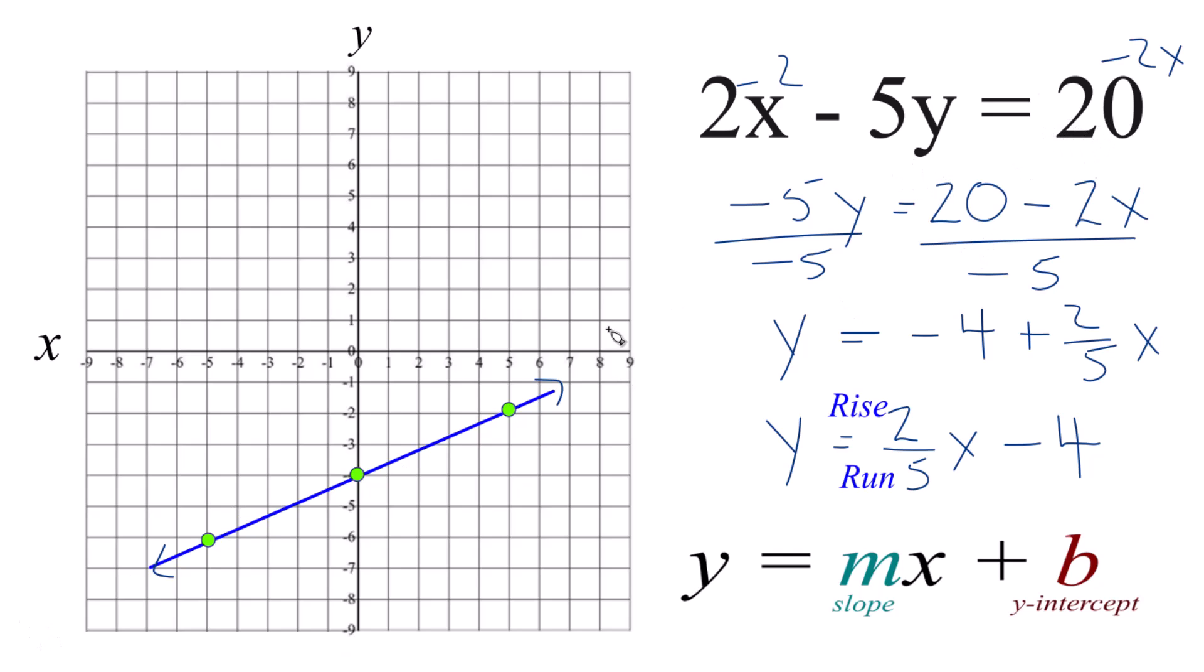If you use a table of values, you get this same line here. It's Dr. B graphing 2x minus 5y equals 20. Thanks for watching.